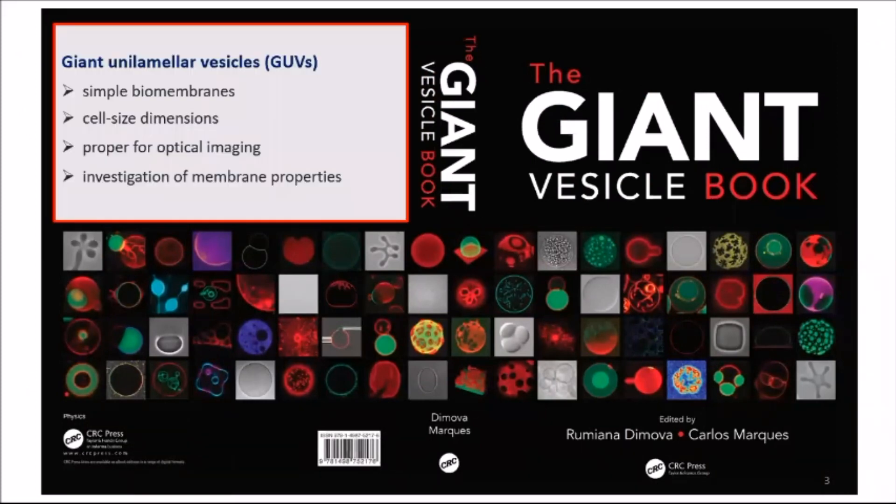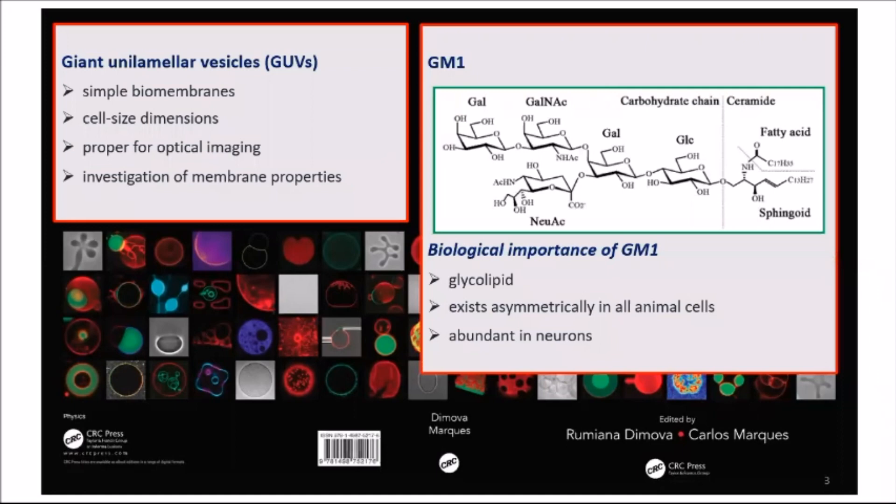GUVs are cell-sized simple biomembranes used for understanding membrane stability and mechanics. In my project, GUVs also contain GM1 gangliosides because it's a biologically important glycolipid. It exists asymmetrically in all animal cells, very abundant in neurons and related to many cellular events and neurological disorders.